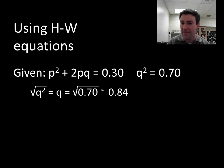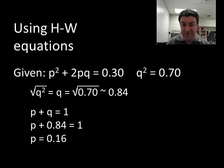Okay, well now that I have Q, I can just use that first equation. P and Q have to add up to be 1, so if I know that Q is 0.84, that must mean that P is 0.16. 16 percent of the alleles in the gene pool are dominant.